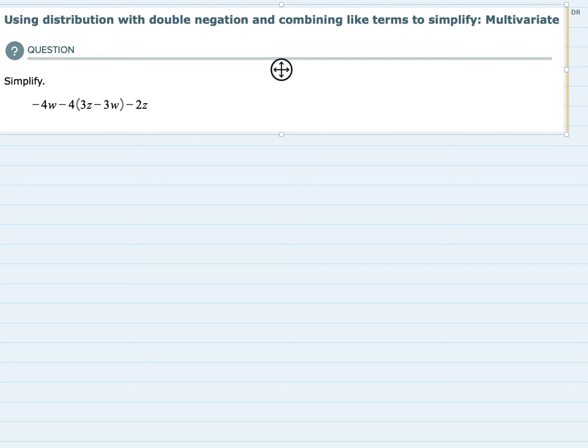Multivariate means that we have multiple variables here. You can see we have some W's, we have some Z's, and we're also told that we're going to be using distribution.